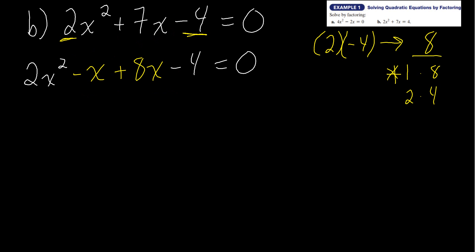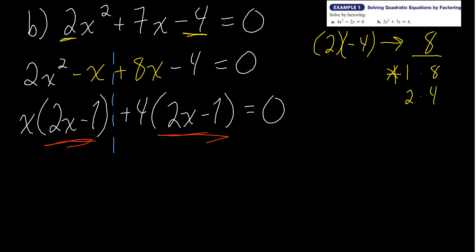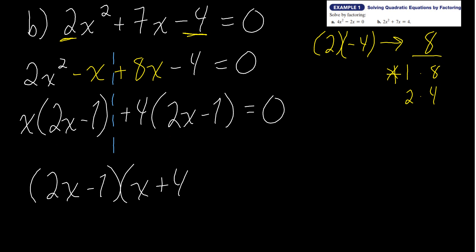We split it down the middle and factor each half. On the left side I can factor out an x, leaving 2x minus 1. On the right side I can factor out positive 4, also leaving 2x minus 1. If you did this correctly, what's in the parentheses will be the exact same — and indeed they are. We factor out the common parentheses: (2x minus 1)(x plus 4) equals zero.